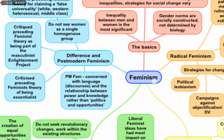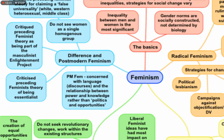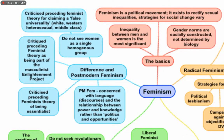The fourth category is difference or postmodern feminists. These theorists do not see women as a single homogenous group. The other three theories see women as a single group who are oppressed and men as the oppressors. Postmodern feminists criticize previous feminist theories for claiming a false universality. They believe that all previous feminist movements actually represented white, western, heterosexual, middle-class families — a typical nuclear family in the western world. Even if those movements claimed to talk about all women, the crux of their ideas essentially affected only white western women.